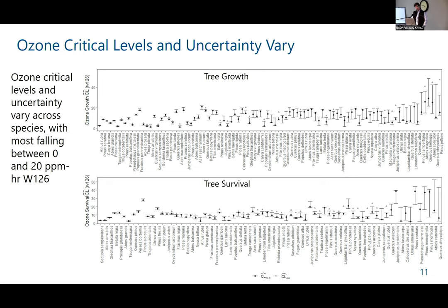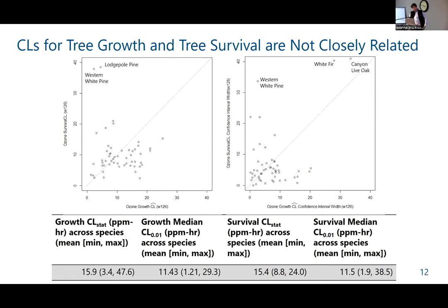We wanted to understand whether there was a relationship between the critical levels for tree growth and survival, and whether there was a relationship between the trees that have high uncertainty for both. Plotting critical levels for growth on the x-axis and survival on the y-axis, we find that there doesn't appear to be much of a relationship between these two critical levels. For the size of confidence intervals, we do find a couple of species — white fir and canyon live oak — with very high uncertainty for both types of critical levels, but that was a bit of a surprise.